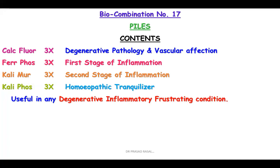There is another combination, number 23, which also contains Calcarea Fluorica along with Ferrum Phos and Mag Phos — written for toothache. Whenever there are degenerative changes along with pain, that remedy is very important, but Kali Phos is missing in it. Kali Phos is present in both 17 and 26. It depends on what type of patient comes and at what stage, and accordingly this combination can be selected. Degenerative inflammatory frustrating conditions along with hemorrhoids and varicose veins: Bio-combination 17 plays a very vital role.